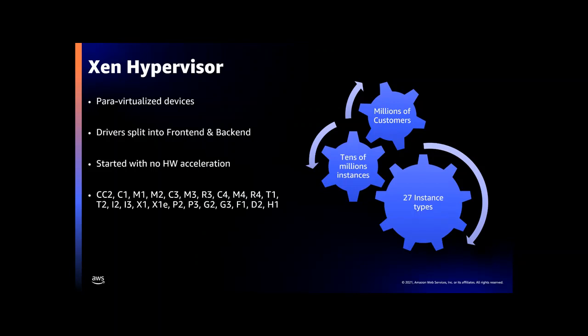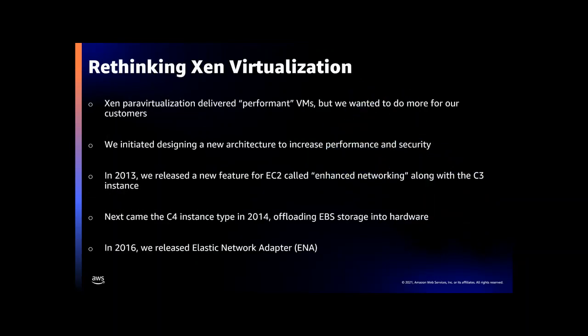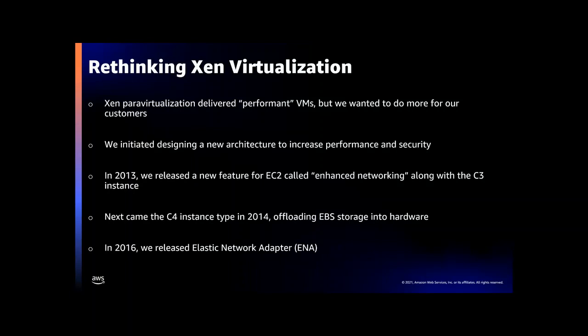15 years have passed since we launched M1 small, and throughout those years we have launched 27 instance types built on Xen in four generations. Today we have millions of active customers running tens of millions of Xen-based instances. During that time, CPU vendors didn't stand still. Newer and more capable CPUs were brought to market, and one of those capabilities was hardware virtualization extensions — familiar to some of you as Intel's VMX or AMD's SVM. Our newer Xen instances made use of those hardware virtualization extensions to avoid the need for PV kernels, but what about those PV devices?